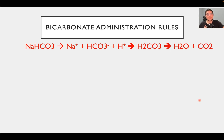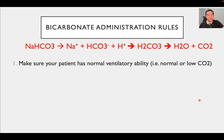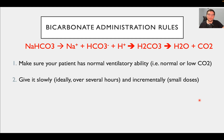There are certain bicarbonate administration rules that are important whenever you're considering giving it. Rule number one: make sure the patient has normal ventilatory ability — either normal or low partial pressure of CO2 — because CO2 may worsen if it's already elevated. Rule number two: give it slowly, ideally over several hours if possible, and incrementally — either as a CRI or in very small doses. Giving a large amount of bicarb over a short period of time creates the greatest potential for complications.